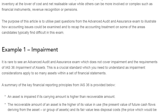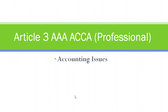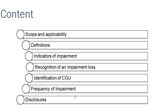Starting with impairment, which is IAS 36 — Impairment of Assets. The content in this article covers scope and applicability, definitions, indicators of impairment, recognition of impairment loss, identification of the cash generating unit, frequency of impairment, and disclosures.